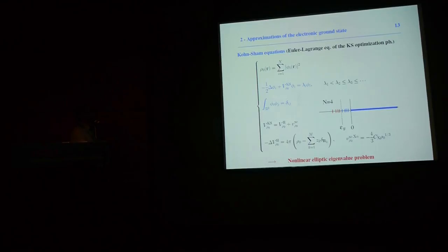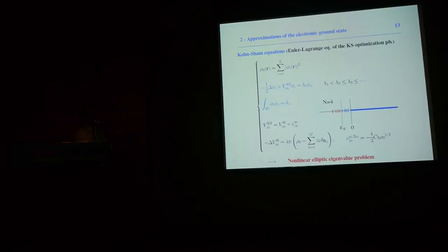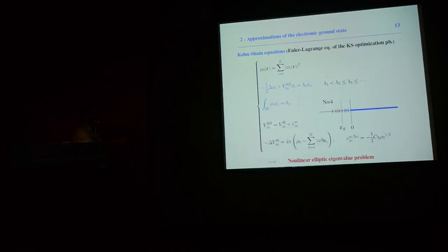Here are the Kohn-Sham equations. The ground state density ρ₀ is obtained as a sum of the squares of orbitals φ_i, for i from 1 to N (the number of electrons). The φ_i are the orthonormal eigenvectors associated with the N lowest eigenvalues of the Kohn-Sham Hamiltonian: minus half the Laplacian plus a multiplicative Kohn-Sham potential, which is itself the sum of the Hartree potential — the electrostatic potential generated by the total charge density — and the exchange-correlation potential V_xc.